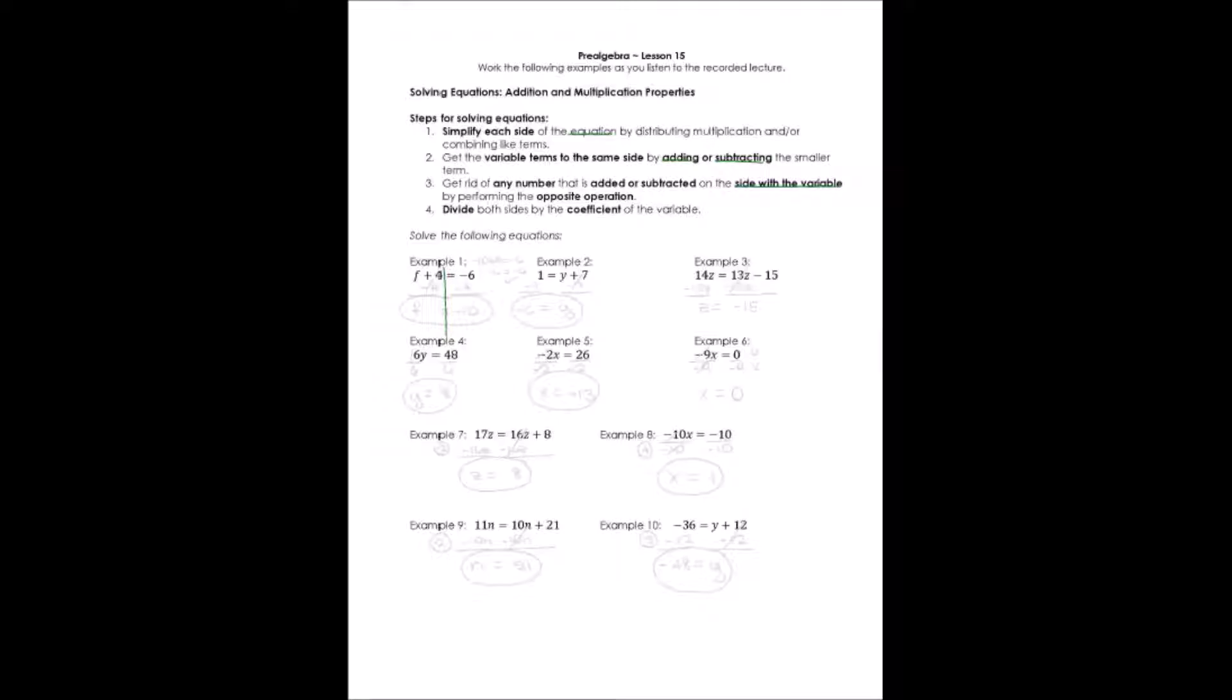So this has f plus four is equal to negative six. The place I'm going to start is my variable terms are already on the same side. F is the only variable term there. Each side is already simplified, so I don't have to do step one. But step three says get rid of any number that is added or subtracted on the side with the variable. And over here with f, I do have a four that's added plus four. I want to do the opposite operation. Instead of adding four, I'm going to subtract four from that side. That will get rid of that four.